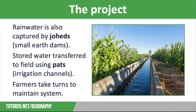Rainwater is also captured by small earth dams known as Joheds, which have been highly successful in raising the water table by up to six metres. Rivers that previously dried up once the monsoon season was over are now flowing all year round. This stored water is then transferred to fields using irrigation channels known as pats, where the water is diverted using a small stone dam called a bond, which controls the flow of water, as shown on screen.